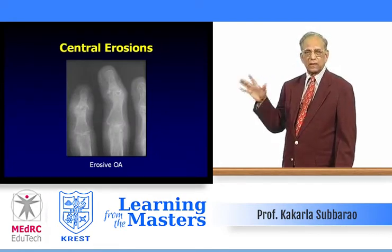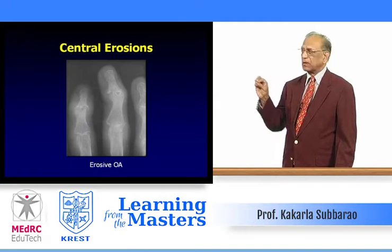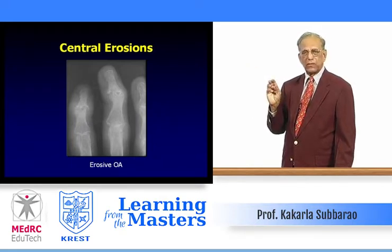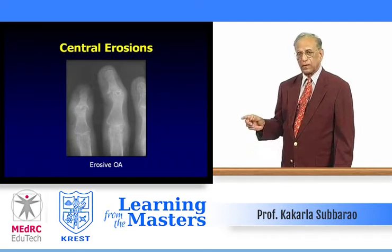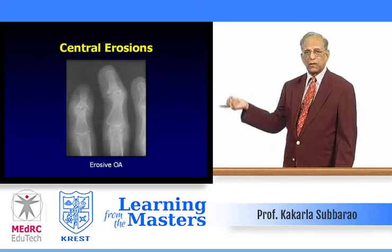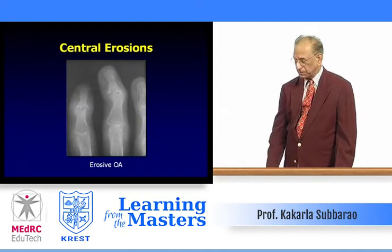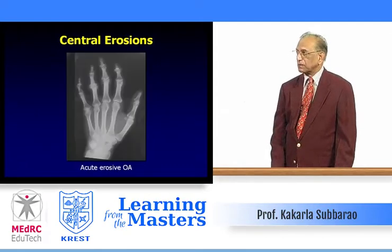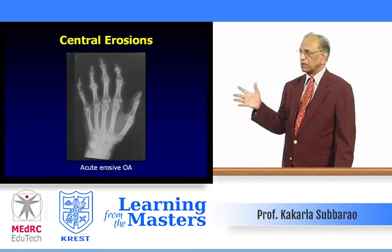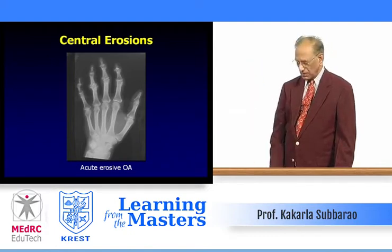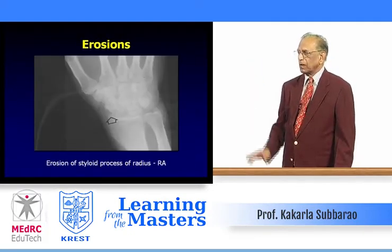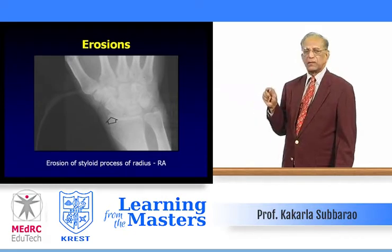Central erosions are common in erosive osteoarthritis, more commonly involving the proximal interphalangeal joints. If there is absence of erosions, it is called primary osteoarthritis. Central erosions also occur in acute erosive osteoarthritis. Erosion of the styloid process of the radius is also significant.